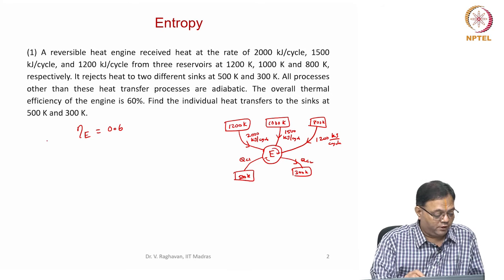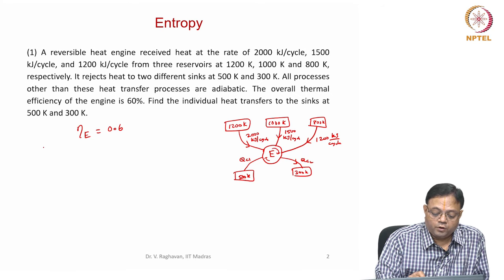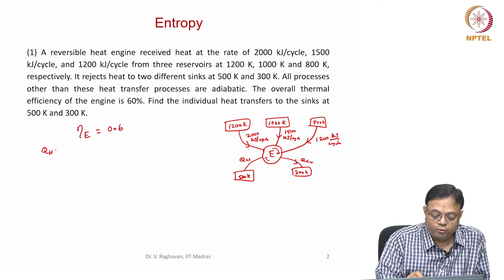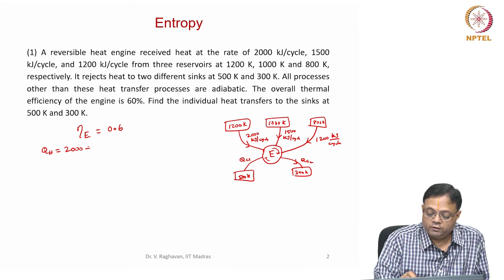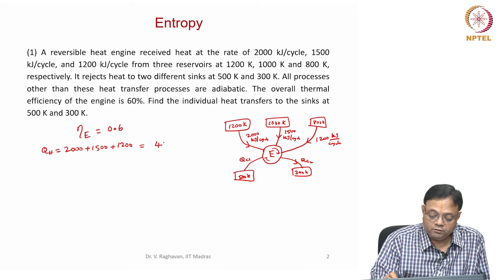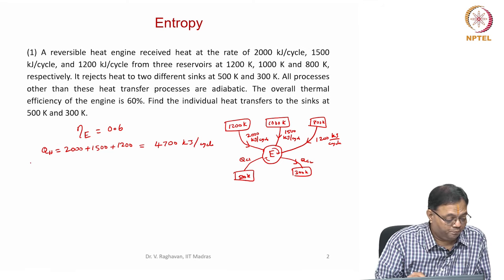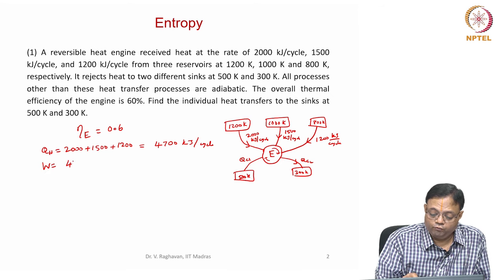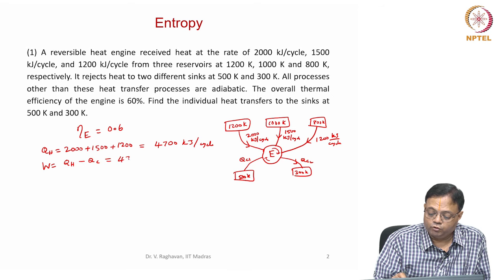This is a reversible heat engine — that we have to keep in mind. Q_H equals 2000 plus 1500 plus 1200, equal to 4700 kilojoules per cycle. Work equals 4700 minus Q_C1 minus Q_C2.